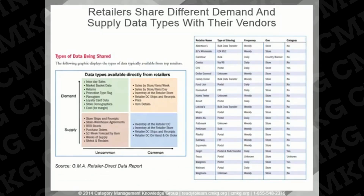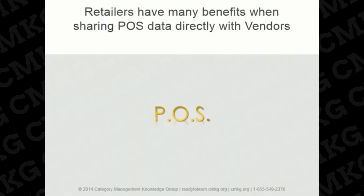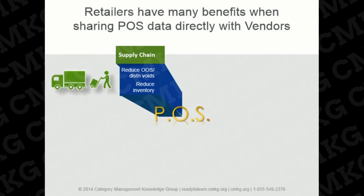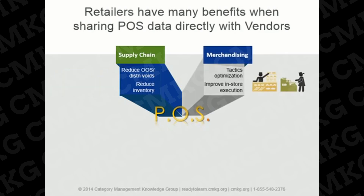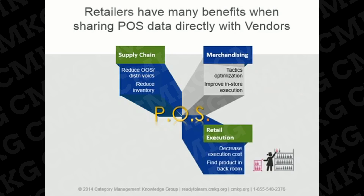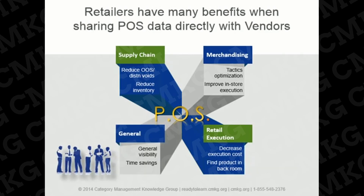Retailers can have several different applications providing access to their POS data based on their viewing audience, and internal access will most likely look different than data made available to vendor partners or category captains. This chart captures a list of some retailers sharing POS data directly with their vendors. We can divide the retailer's benefits for sharing POS data into four categories: supply chain benefits including reduced out of stocks, distribution voids, and inventory; merchandising benefits including promotion, pricing, and planogram optimization, as well as improved in-store execution.